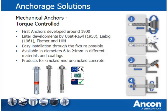Different product types are available, some with European Technical Approval (ETA) and some with ICC Evaluation Service Reports. While the first products were developed around 1900, torque-controlled mechanical anchors only became commercially available with developments by Upat, Liebig, Fischer and Hilti. Torque-controlled anchors are available in a wide range of diameters, lengths and finishes.